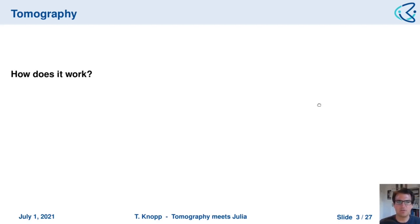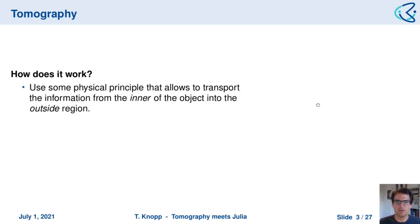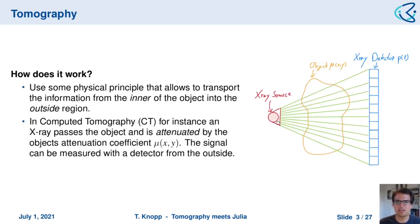So how does this work? In tomography we want to have a look inside the object, and inside the object we have some function we want to determine. We need to transport the information from inside the object to the outside — that is the key element. As an example, in computer tomography you have an x-ray source, and an x-ray beam goes through the object represented by the attenuation coefficient mu(x,y). At the x-ray detector we detect a signal p(xi), and by rotating the source-detector stand we can, after inversion, determine mu(x,y) in an image reconstruction step.